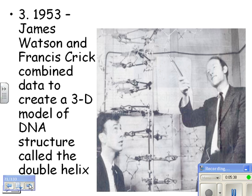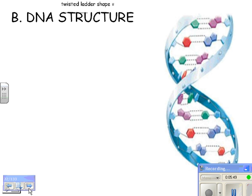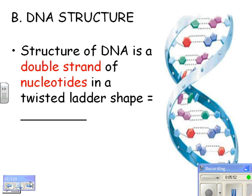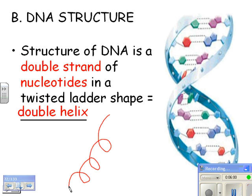In 1953, Watson and Crick combined DNA data to create a model of DNA called the double helix, and this is the model that we use today. The structure of DNA is a double strand of nucleotides in a twisted ladder shape — we call it a double helix. A helix is anything with a twisty shape. Think of a staircase that goes up and twists along the way. You've got a ladder, and then just think about twisting the whole thing — that's how you get your double twisted ladder, your double helix.